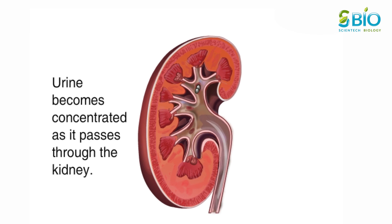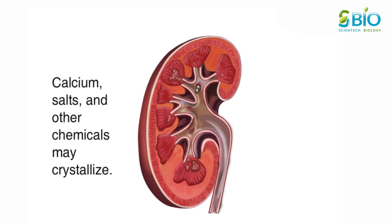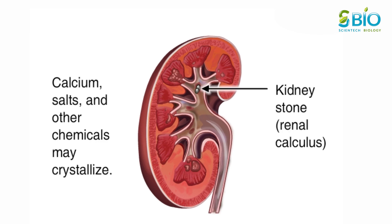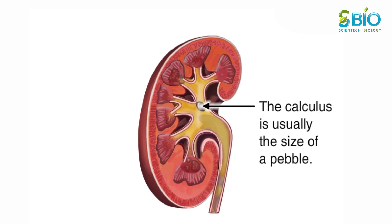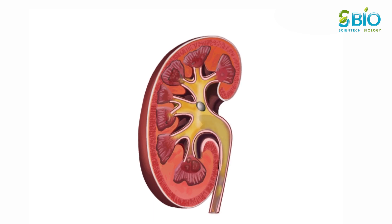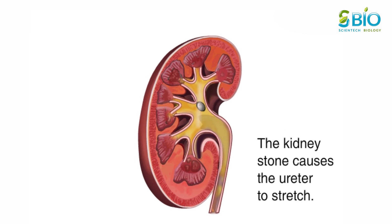As urine passes through the kidney, it can become very concentrated. When the urine becomes too concentrated, calcium, uric acid, salts, and other chemicals dissolved in the urine may crystallize, forming a kidney stone, or renal calculus. Usually the calculus is the size of a small pebble.